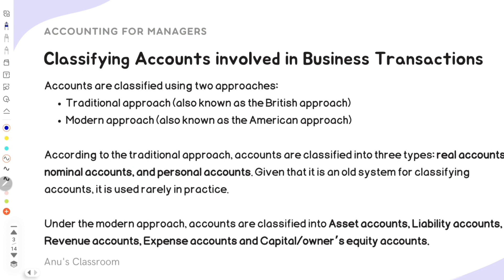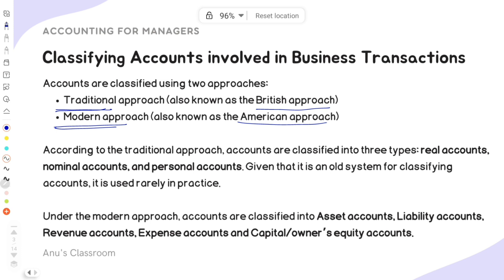So how do we classify the accounts involved in a business transaction? We actually have two approaches. The first is the traditional approach, also known as the British approach. The second is the modern approach, also known as the American approach. According to the traditional approach, accounts are classified into three types: real, nominal, and personal.